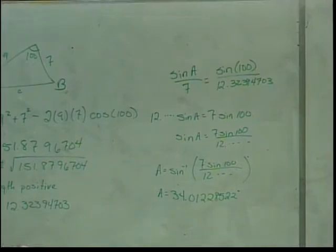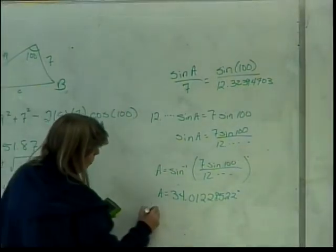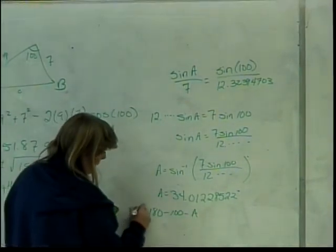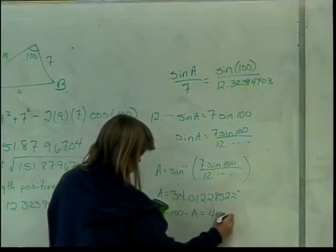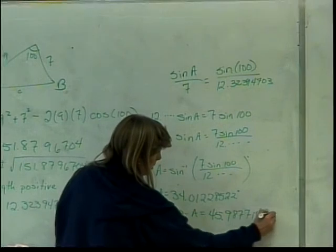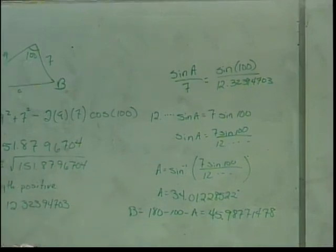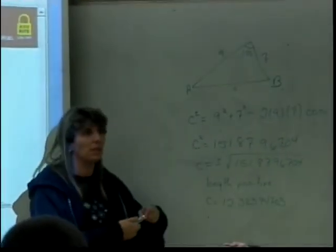Yes. So how do I find B? Yeah, probably take the two angles and then subtract from 180. So I would do plus 100 for that angle and subtract it from 180. So I'm going to have 180 minus 100 minus angle A, which I'm not going to bother to write all down, to get angle B. And angle B is approximately 45.98771478. Now you don't really need all those decimals in your answer, but you do need all those decimals in the calculation because it can be enough to mess it up along the way.